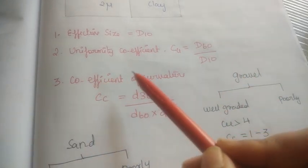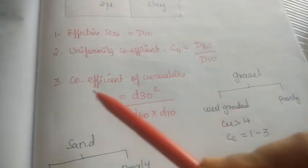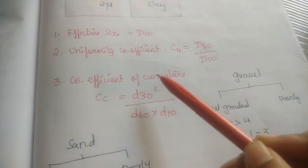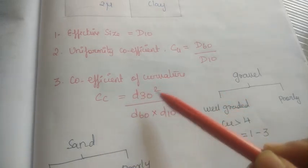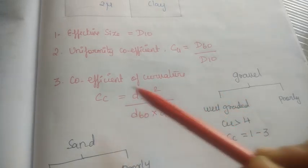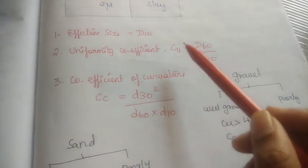The coefficient of curvature Cc is equal to D30 squared divided by (D60 multiplied by D10). This formula we have to note.